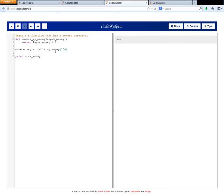All right. So we call the function with 100, it multiplied it by two, and it returned that value. And that value was placed in this more money variable. And then when we printed that variable out, the value contained into the console.